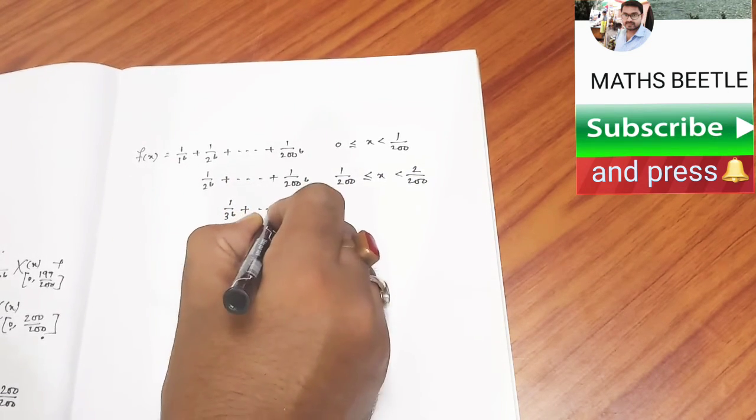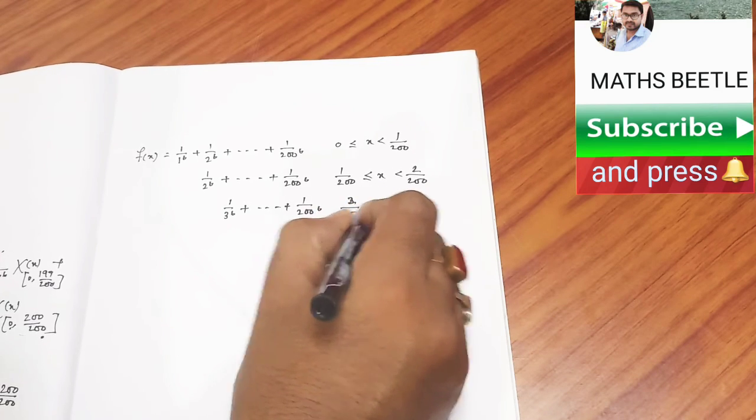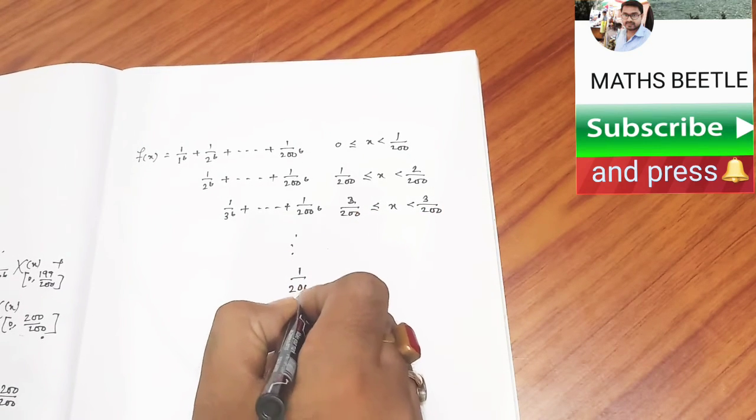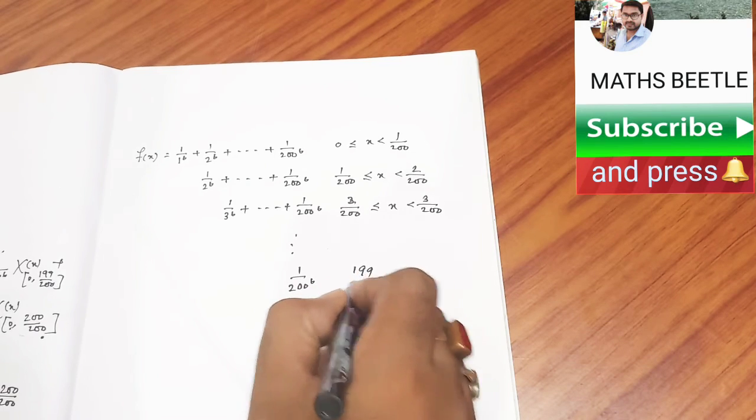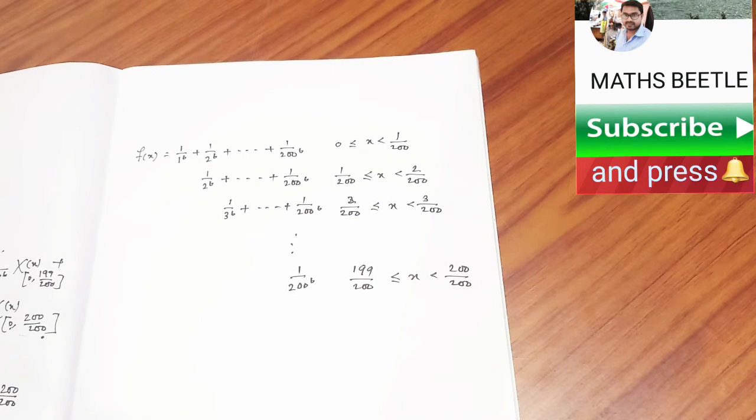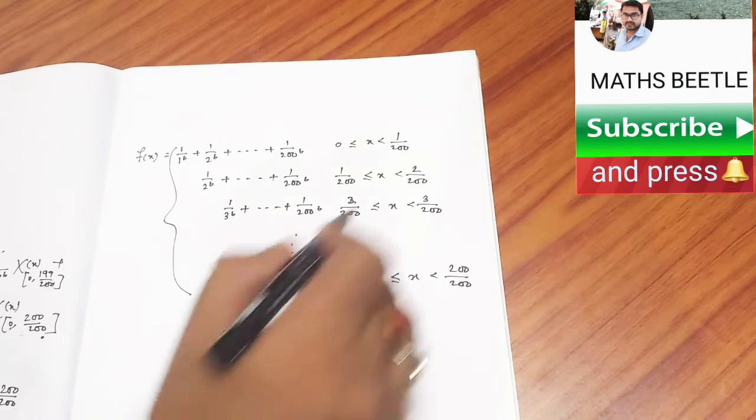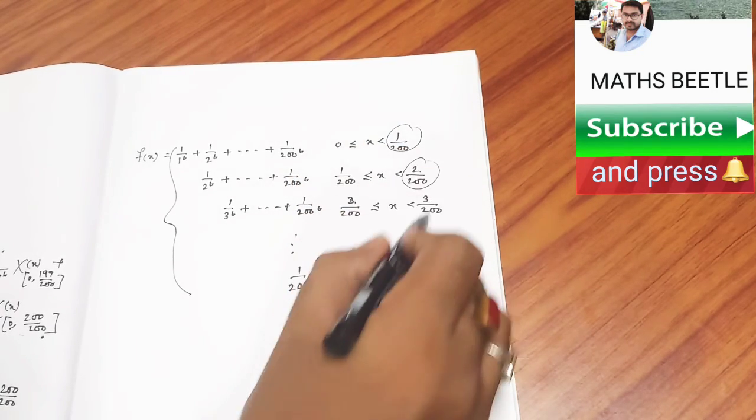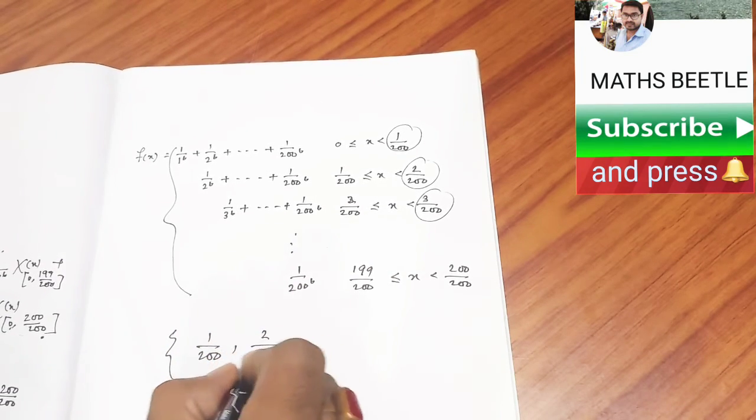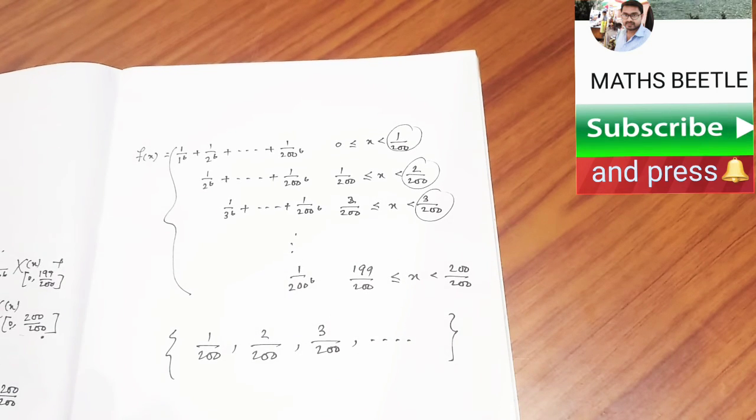Obviously, this function f(x) is discontinuous at these points, at these points. This function is discontinuous at these points.